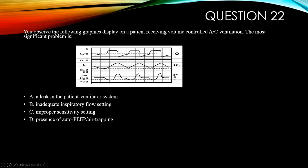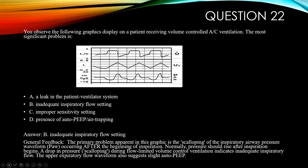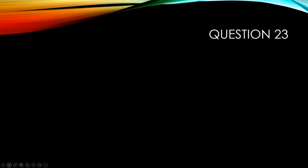Question twenty-two: you observe a graphic display on a patient receiving volume control AC ventilation. The most significant problem is A, a leak in the patient-ventilator system; B, inadequate flow; C, improper sensitivity; or D, presence of auto-PEEP/air trapping. The correct answer is B, inadequate inspiratory flow. The primary finding is scalloping of the inspiratory airway pressure waveform after inspiration begins. Normally pressure rises after inspiration; a drop (scalloping) during flow-limited volume control ventilation indicates inadequate inspiratory flow. The expiratory flow waveform pattern also suggests slight auto-PEEP.